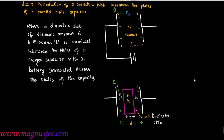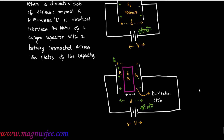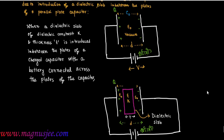In the diagram, we can see that a battery is connected to the parallel plate capacitor, and V is the terminal voltage of this battery. The battery is also connected to the parallel plate capacitor with the dielectric slab. C is the capacitance of the parallel plate capacitor with the dielectric slab.